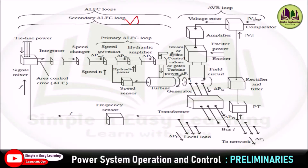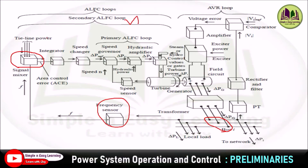The second is the secondary ALFC loop. In this loop, a frequency sensor senses the frequency at the bus bar directly. This frequency is compared with the tie line power frequency. The tie line is the line where frequency and voltage remain constant, so that frequency is taken as the reference frequency. The actual frequency from the frequency sensor is compared with the reference frequency in a signal mixer, and the output of this signal mixer is the error frequency, called the area control error (ACE). The ACE is sent to the speed changer through an integrator. The integrated signal is sent to the speed changer, which gives the reference speed to the speed governor, and then the primary ALFC loop continues its operation.